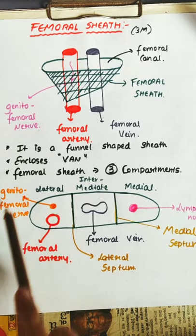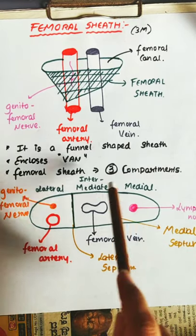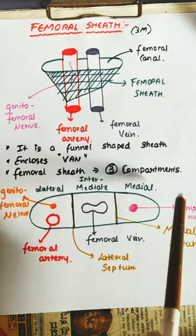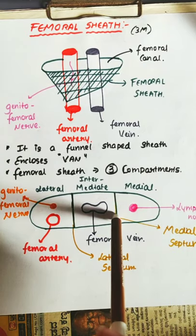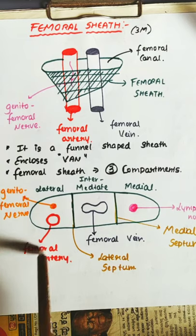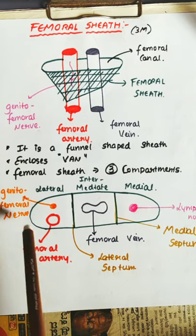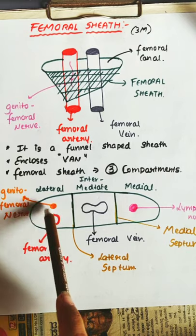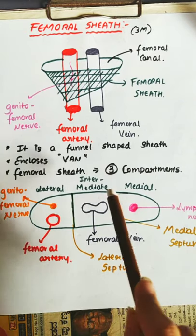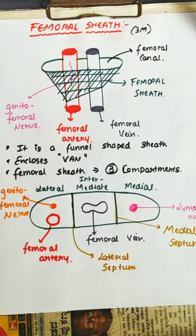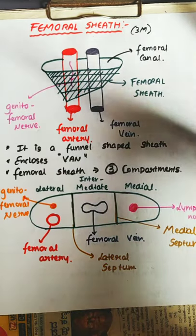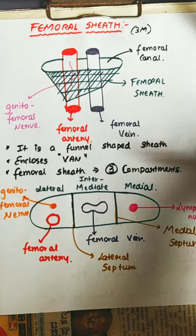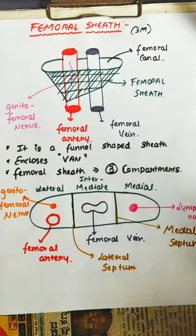Hope you understood the video. The femoral sheath has three compartments: lateral, intermediate, and medial. In the medial compartment, there is a lymph node — only one structure. The intermediate compartment has the femoral vein. The lateral compartment has two structures: the genito-femoral nerve as well as the femoral artery. Between the lateral and intermediate, there is a lateral septum; between the intermediate and medial, there is a medial septum. Please like, share, and subscribe. In the next video, we'll be studying about the femoral canal — a 10-mark question, a very important question. Thank you.